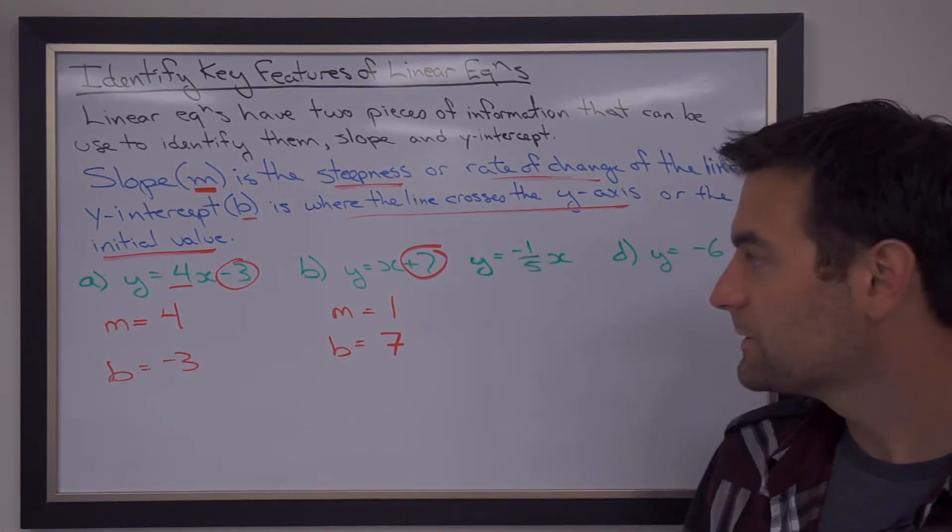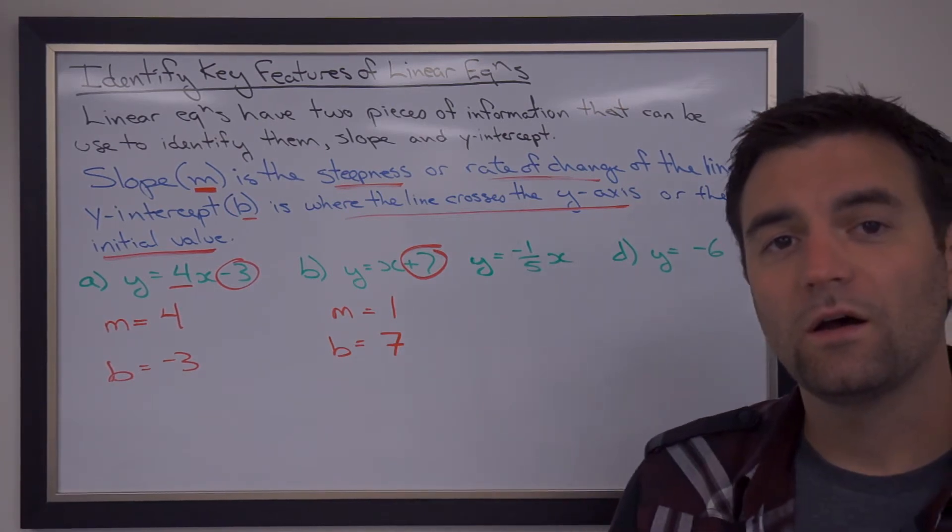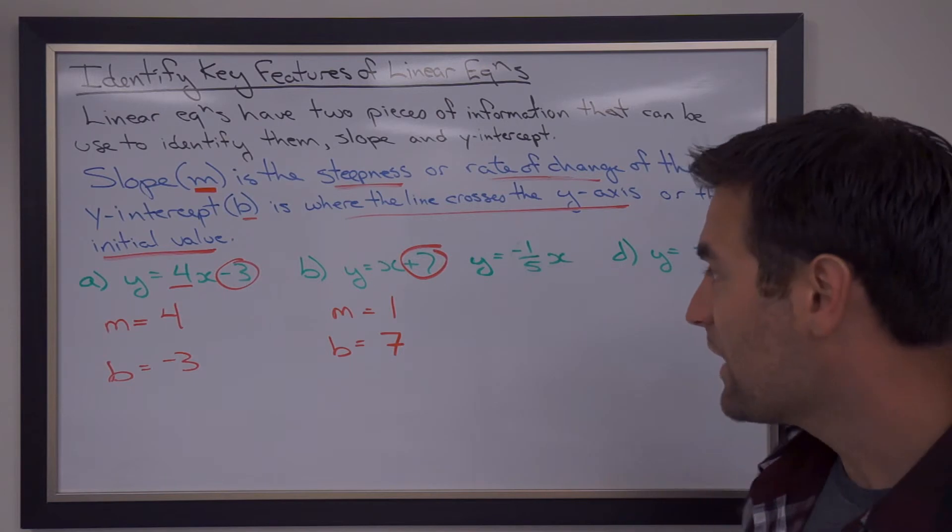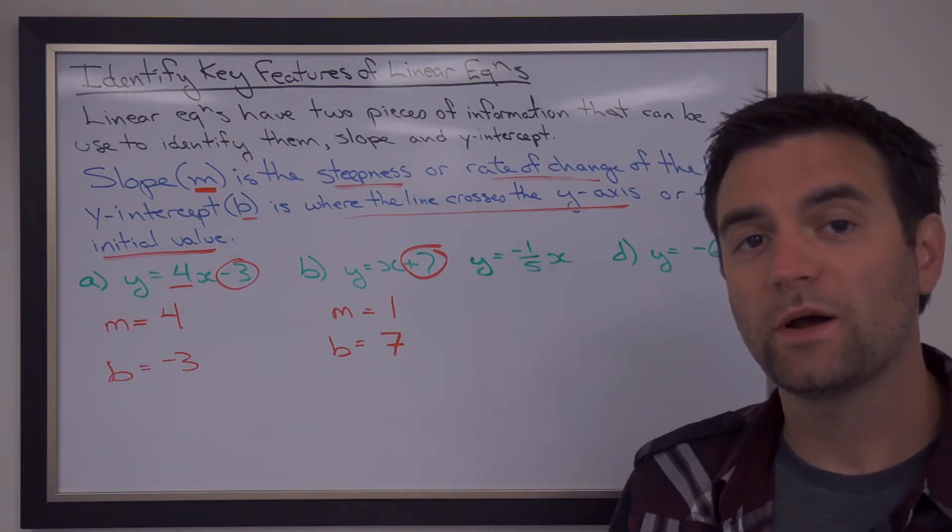In this next case, we don't have a number by itself. We have negative 1 fifth X, but no number by itself.